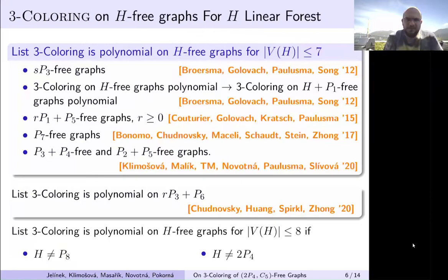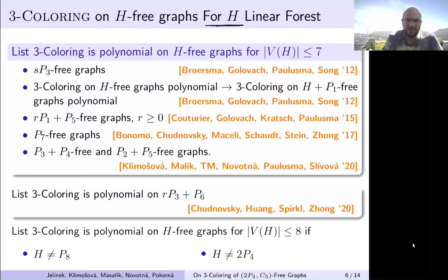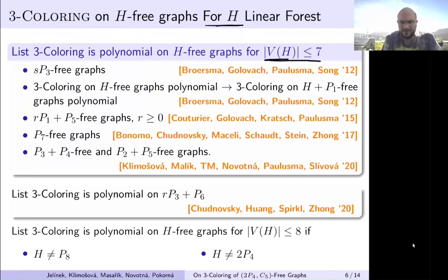Now let's look at how other H can look like — specifically other H being a linear forest. It is known, shown in a couple of papers, that if H has up to seven vertices and is a linear forest, then everything can be solved in polynomial time, so list coloring can be solved in polynomial time.